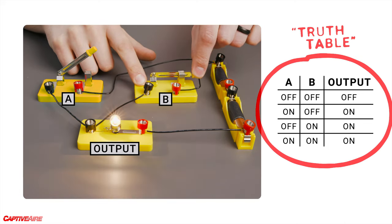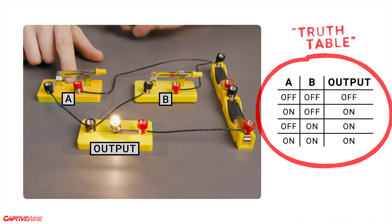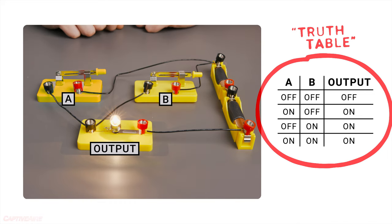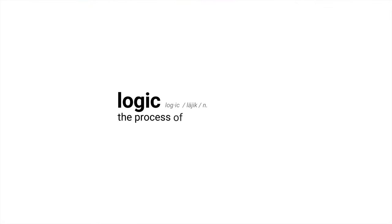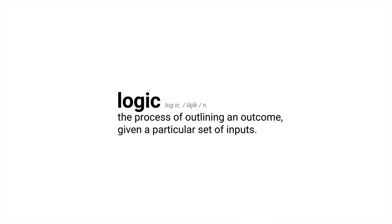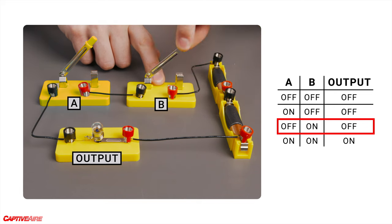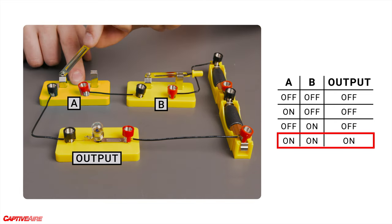The same kind of table can be made for this arrangement, defining what will happen in each scenario. We call this a truth table. There's no gray area here — we can logically map out the output, or whether the light shines, given a specific input — the position of the switches. Logic refers to the process where you outline what the outcome should be given a particular set of inputs.